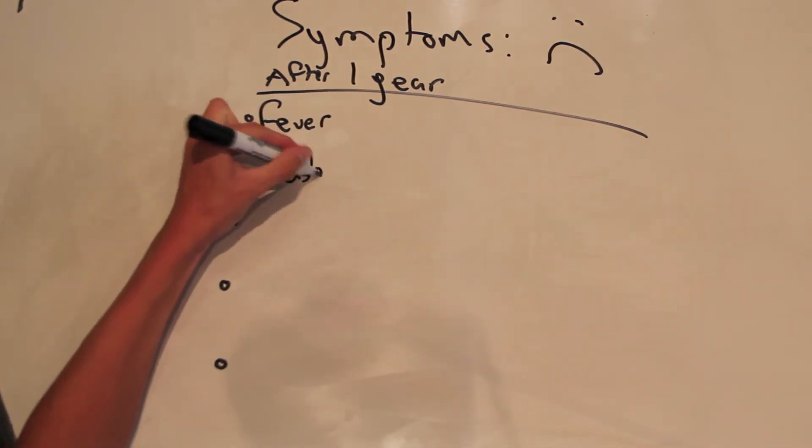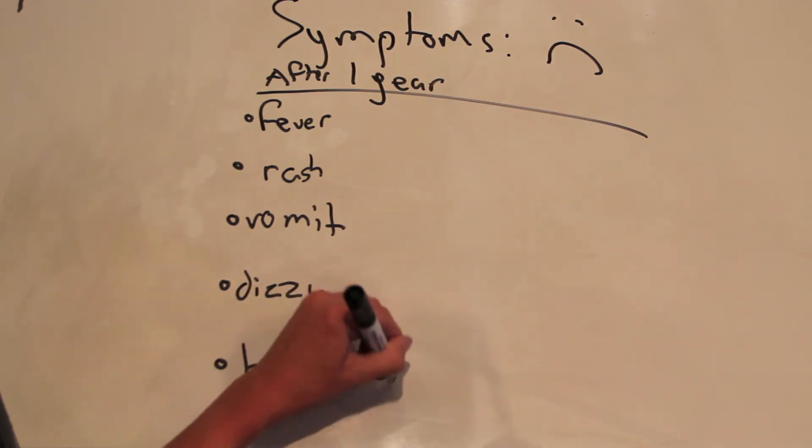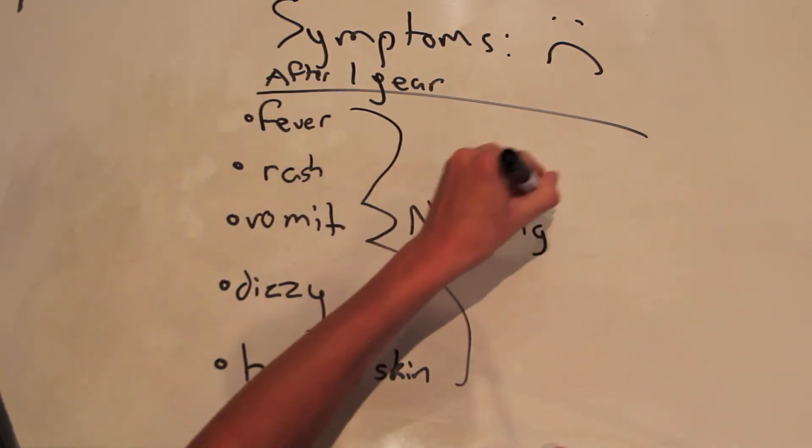There are really five major symptoms that you'll see. It's fever, rash, vomit, dizziness, and red skin or a boil, where the worm actually comes out.